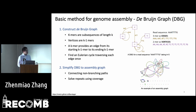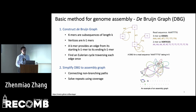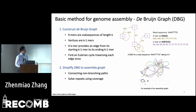To construct a DBG from the read sequences, it takes the k-mer substrings from the reads as vertices of the graph, and all k-mers provide an edge from their starting k-mer to their ending k-mer. To reconstruct the genomic sequence from the DBG, the target is to find an Eulerian circuit that traverses each edge exactly once. In practice, the DBG can be very complex, so we simplify the DBG into an assembly graph by connecting non-branching paths and solving repeats using coverage information of the edges.